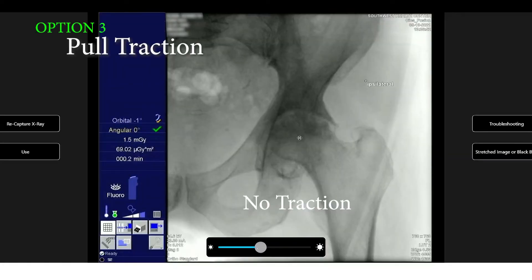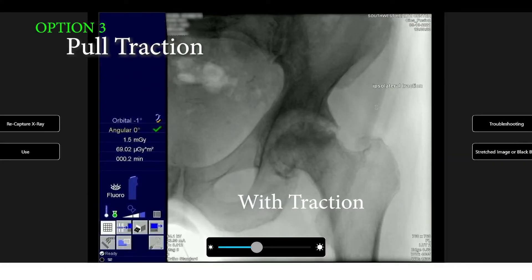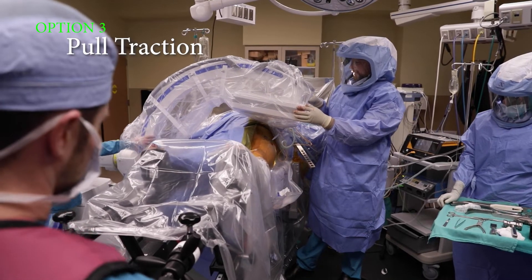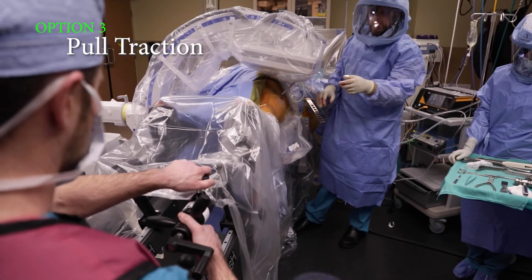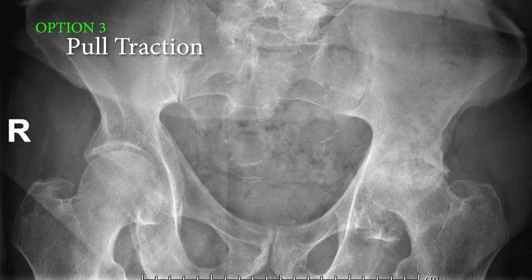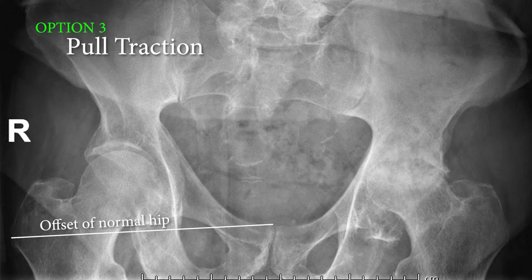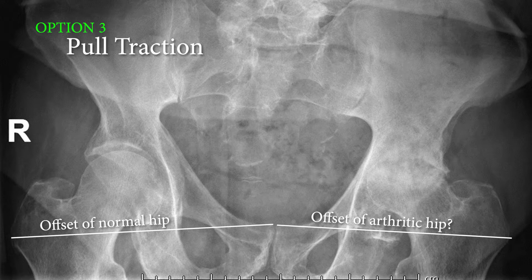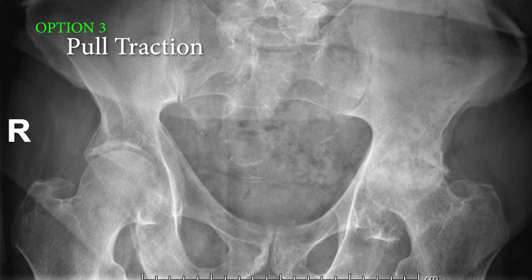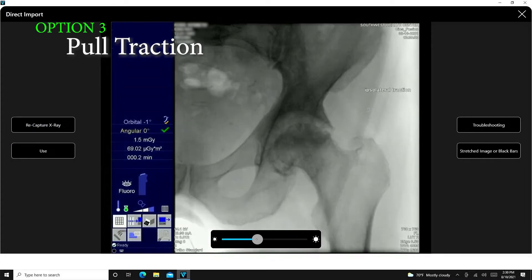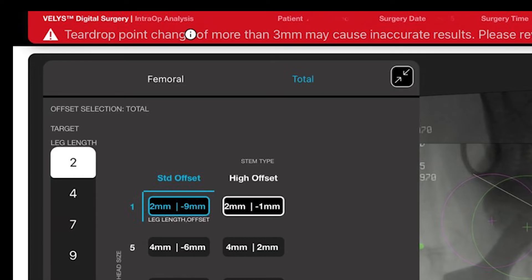The third method uses a traction view of the operative hip before starting surgery. This x-ray is taken with 10 degrees over and 10 degrees of internal rotation of the leg to maximize the femoral offset. This method assumes that we can correct the patient's leg length pathology through axial traction. However, the downside is the patient may have lost significant offset with their hip disease, meaning the offset numbers may not accurately reflect the pre-collapse condition of the hip. Another problem is that by pulling traction, you can inadvertently shift the pelvis, and the surgeon may get a teardrop error if the pelvis has moved.